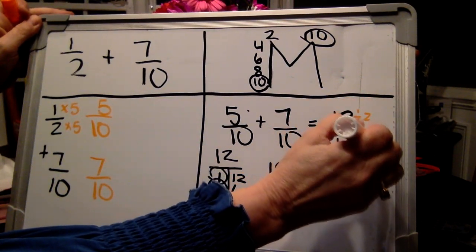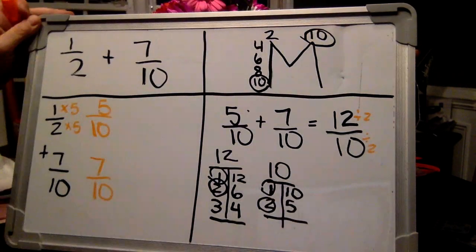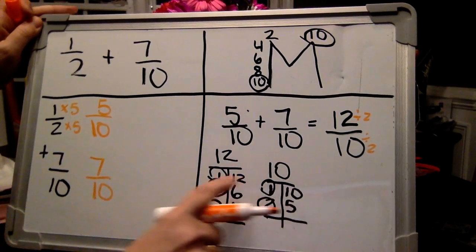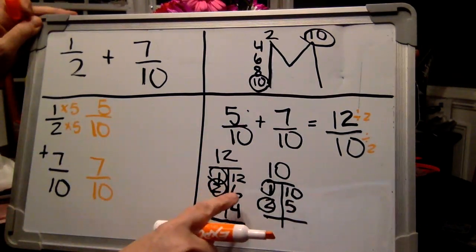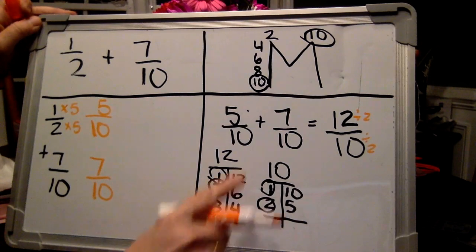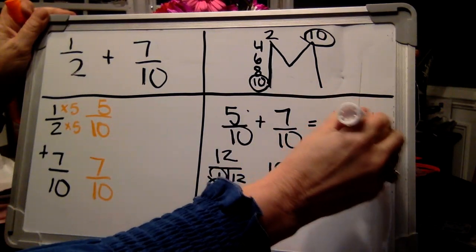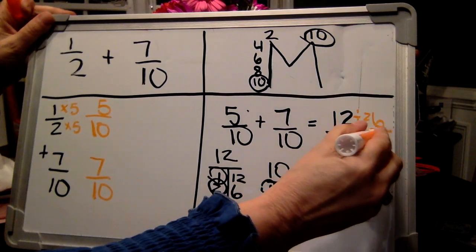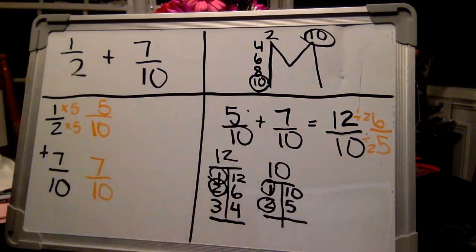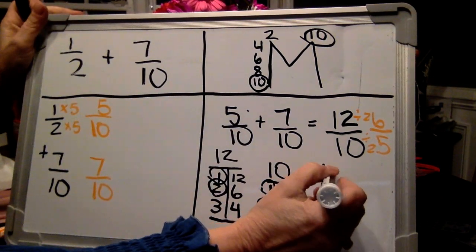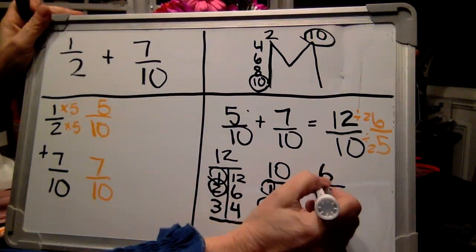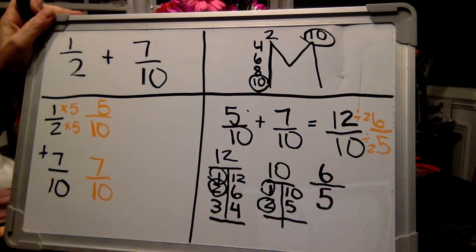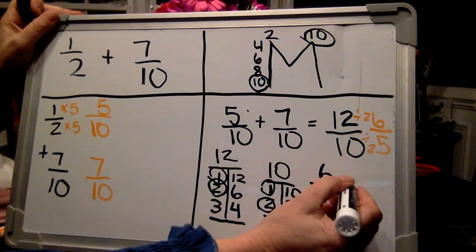Same thing. Whatever you do to the top, the bottom you have to do to the top. So how many twos made a twelve? Go to your chart. Six. And how many twos made a ten? Five. It's kind of crowded up there. I'm going to write it down below. So I got the answer six-fifths when I simplified. I can't leave it like six-fifths, so I have to change it into a mixed number.